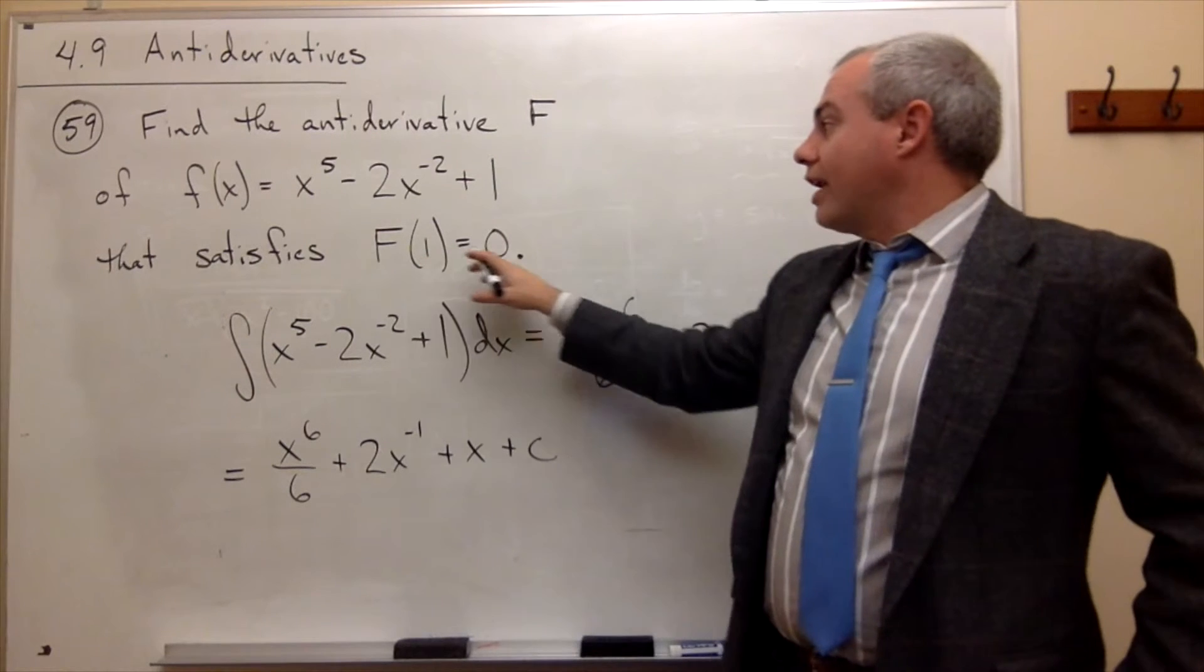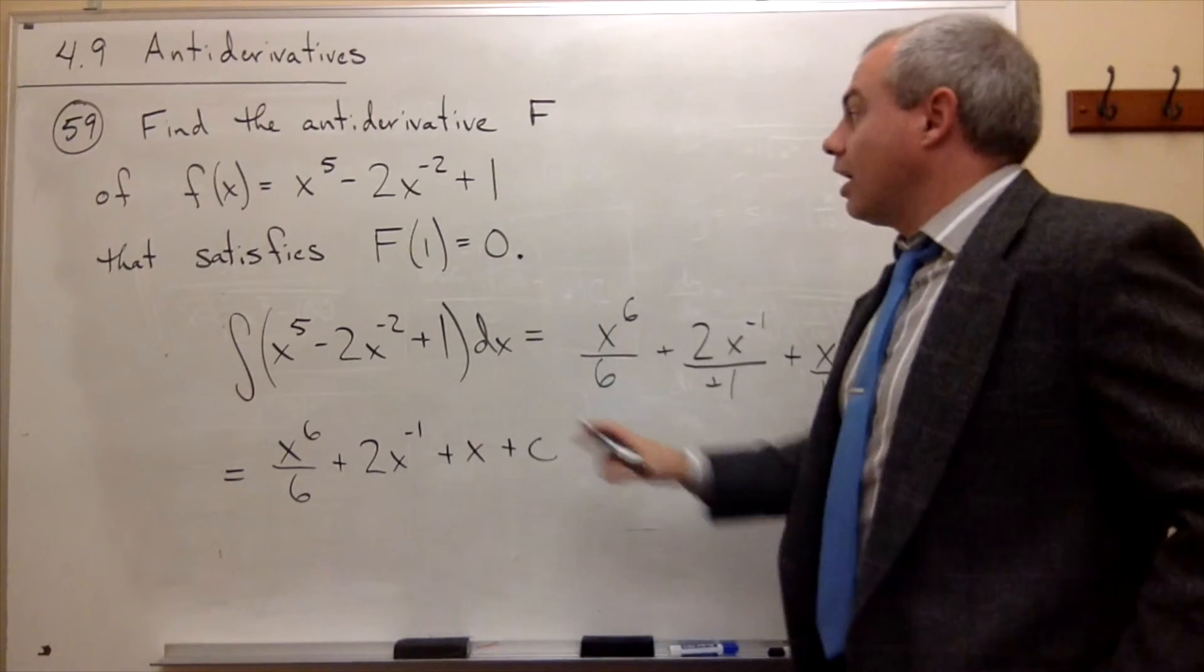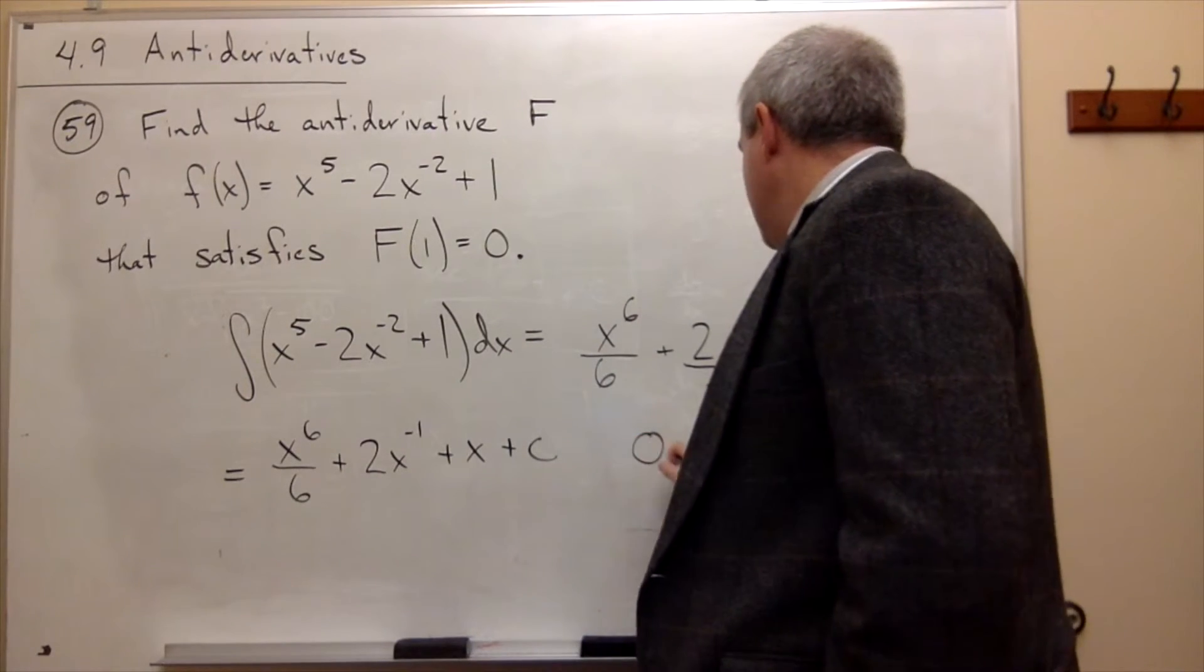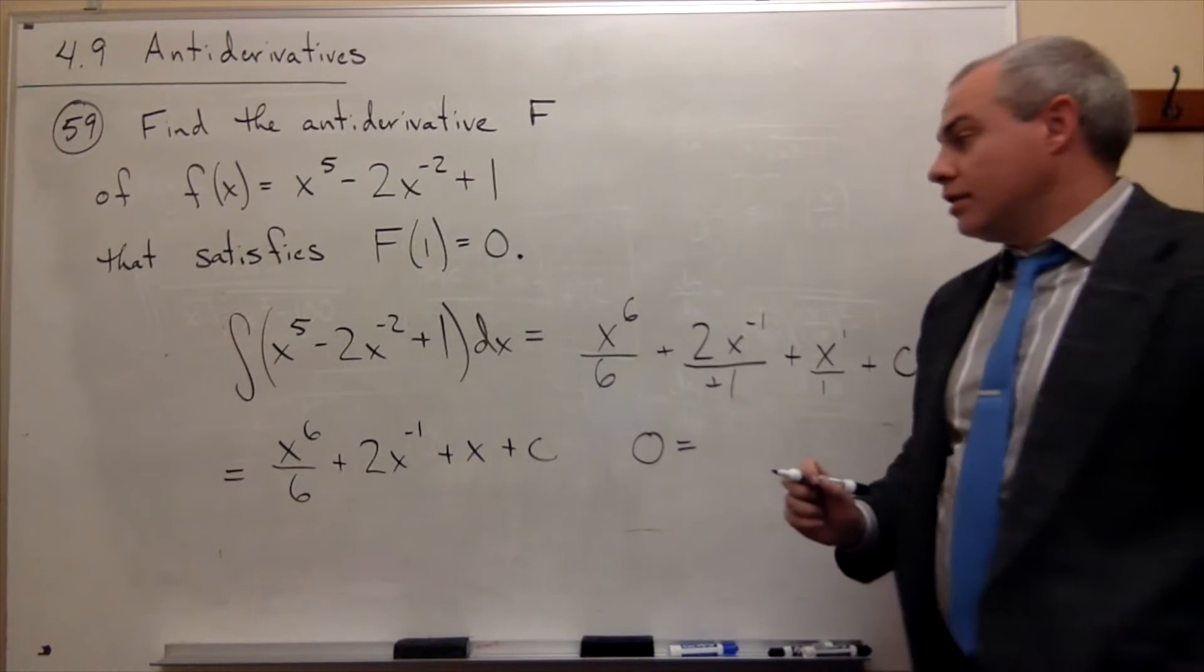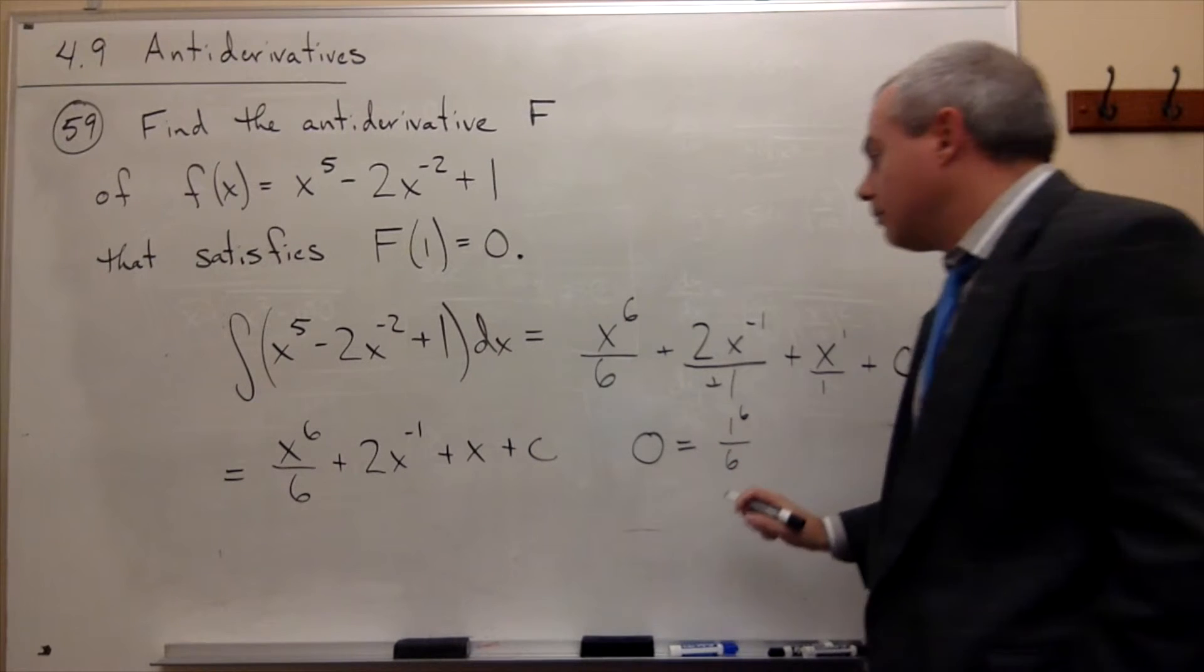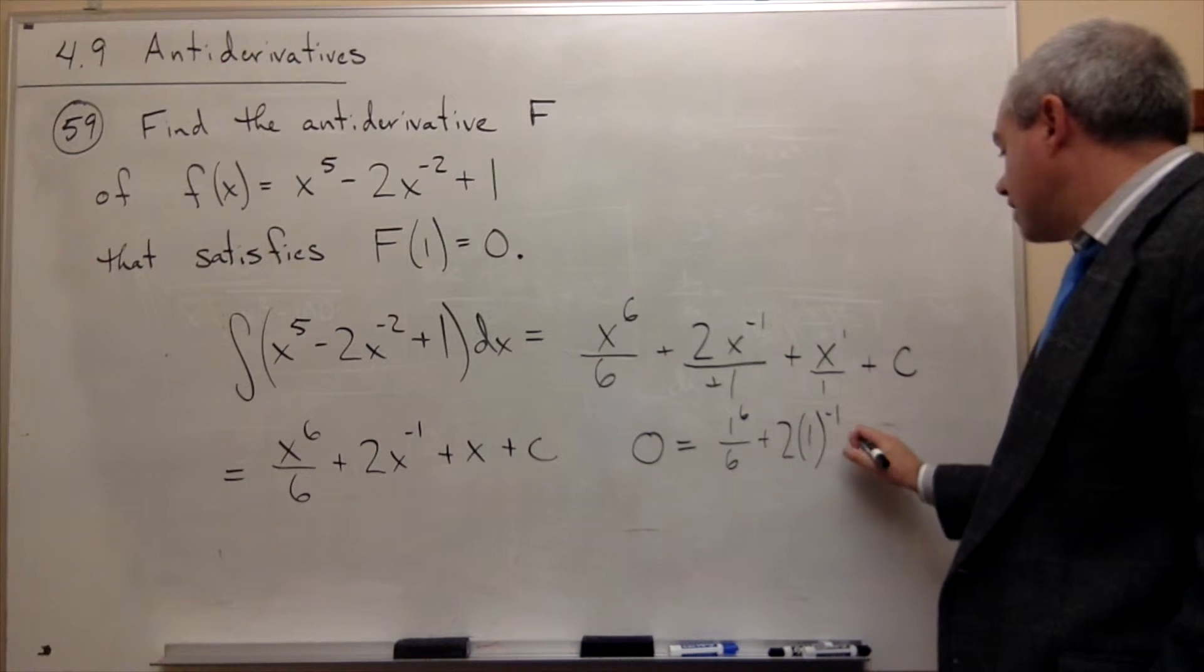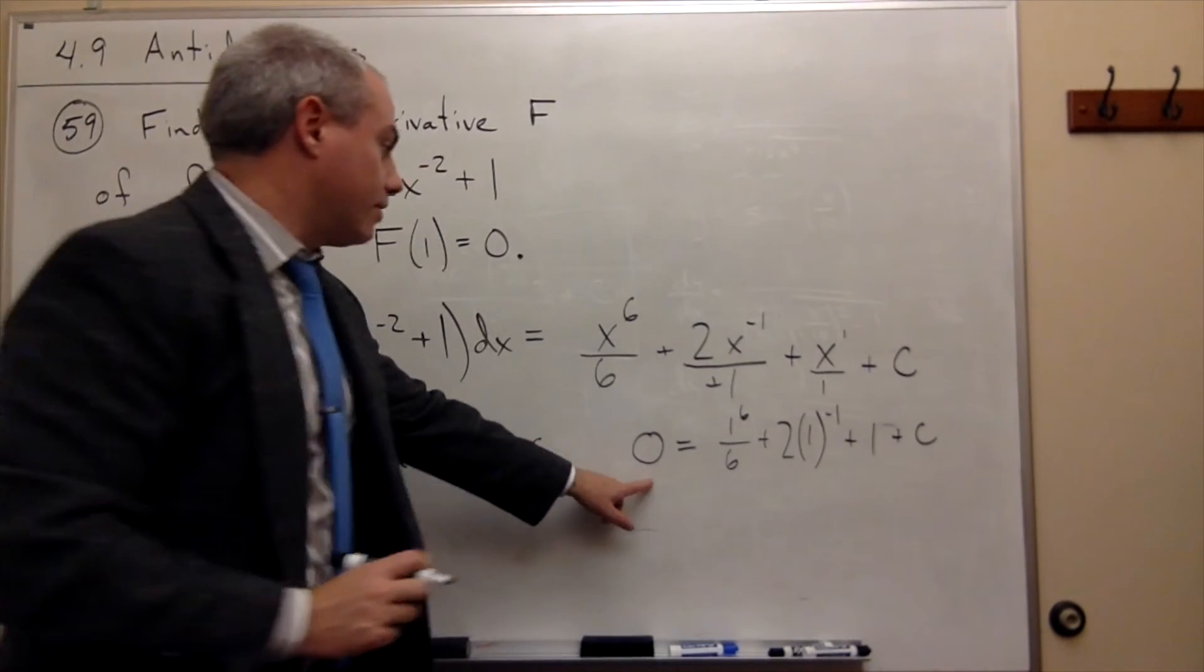Because when x is 1, I need to get 0. So what I'm going to do is I'm going to plug in 1 for x and see what c has to be in order to get 0. So I want 0 to be equal to, plug in 1 for x here. So I get 1 to the sixth over 6, plus 2 times 1 to the negative 1, plus 1, plus c. And that is supposed to be equal to 0.